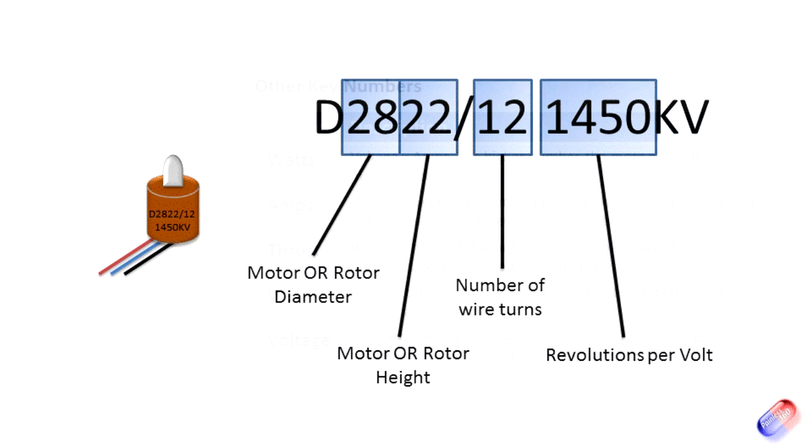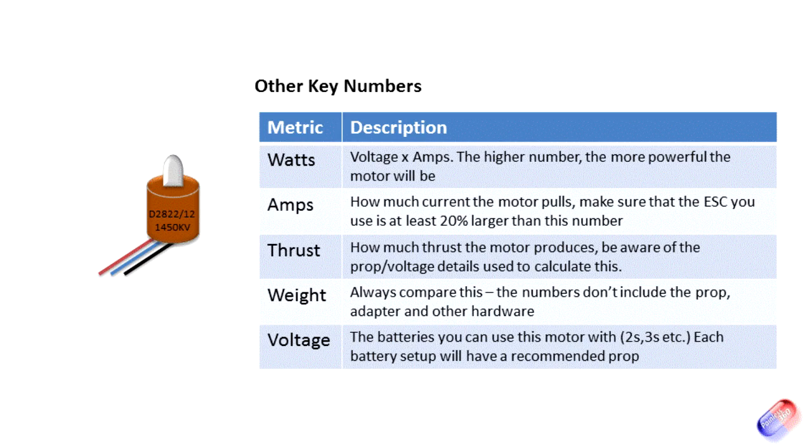The next thing that you also have to be aware of is these other key metrics. First one is the watt number with two T's. Watts are very easy to calculate: you calculate the voltage that's on the motor times the amps that it's pulling. The higher the number, the more powerful the motor. So you'll typically find that quadcopter motors will be about the 150-160 range, the bigger motors will be 250 and above. It's related to the amount of thrust that it generates, but not necessarily. You are looking for motors that do the job for you.